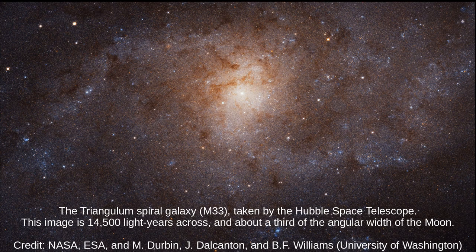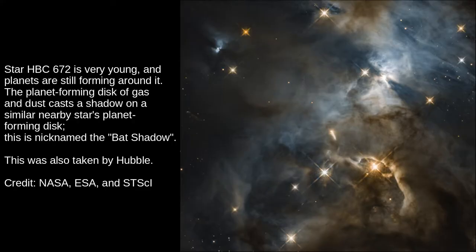Here is the Triangulum Galaxy, imaged by Hubble. This picture is 14,500 light-years across, and appears about a third the size of the Moon in the sky. Star HBC 672 is very young, and planets are still forming around it. The planet-forming disk of gas and dust casts a shadow from the star onto a similar nearby star's planet-forming disk in the upper right. This is nicknamed the Bat Shadow.